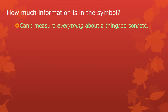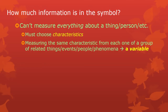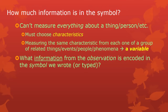The amount of information that went into making the symbols is directly related to the amount of information we can get out of them. If you want to run statistics and answer a research question, the amount of information you can get really depends on how much information is in that scale in the first place. We can't measure everything about the things we observe — people, events, phenomena, concepts. You're observing something out there, but you have to choose characteristics. When you measure one characteristic from a group of related things, that characteristic becomes a variable.